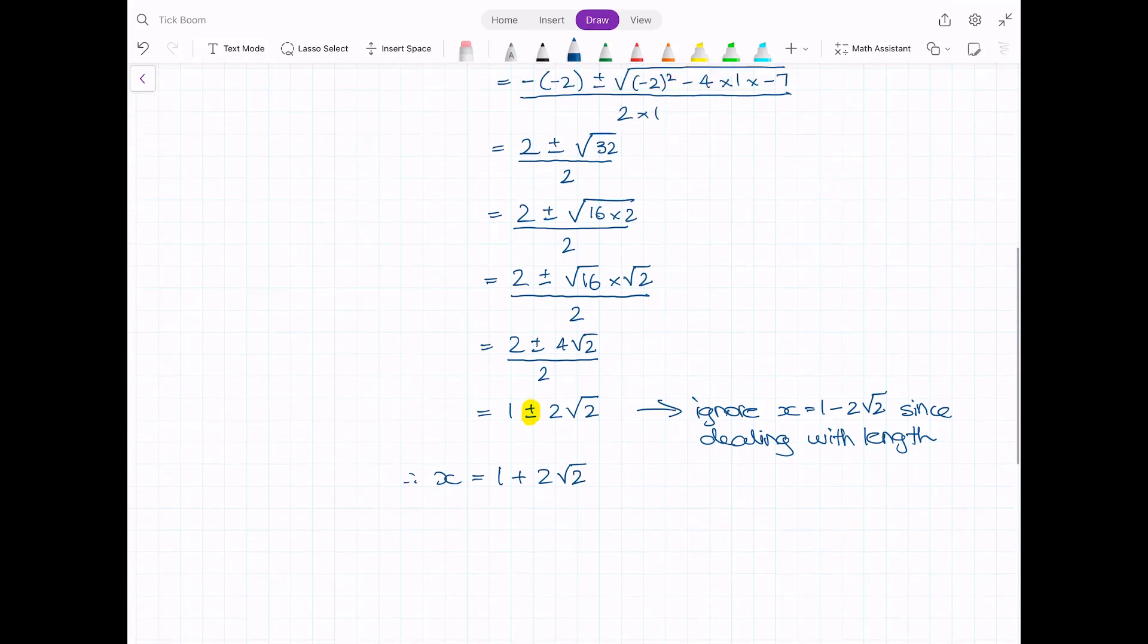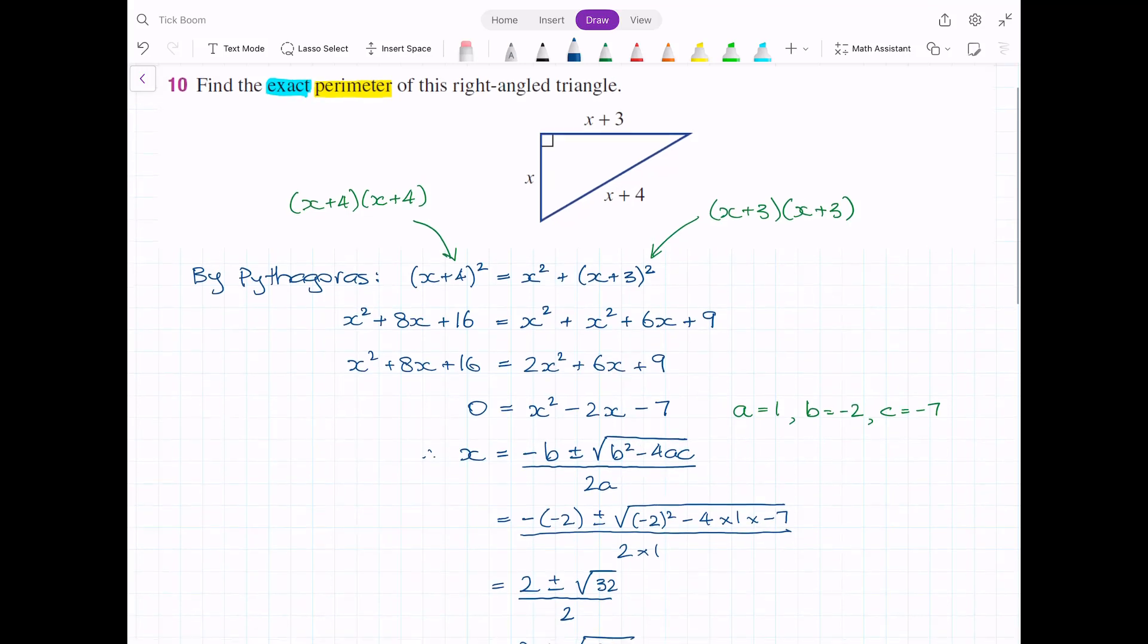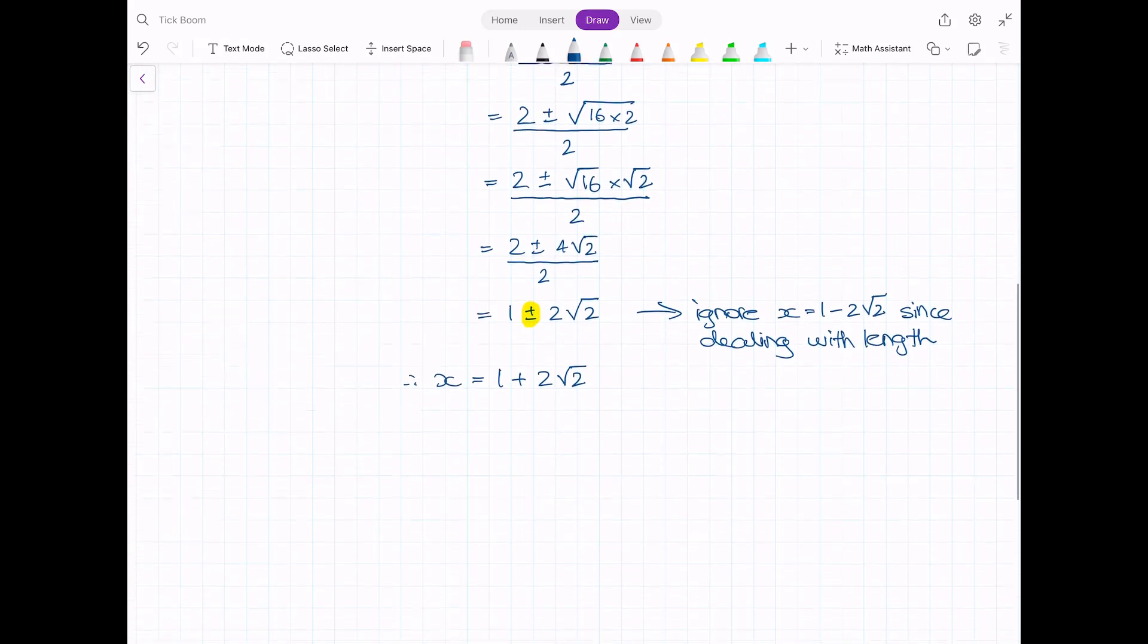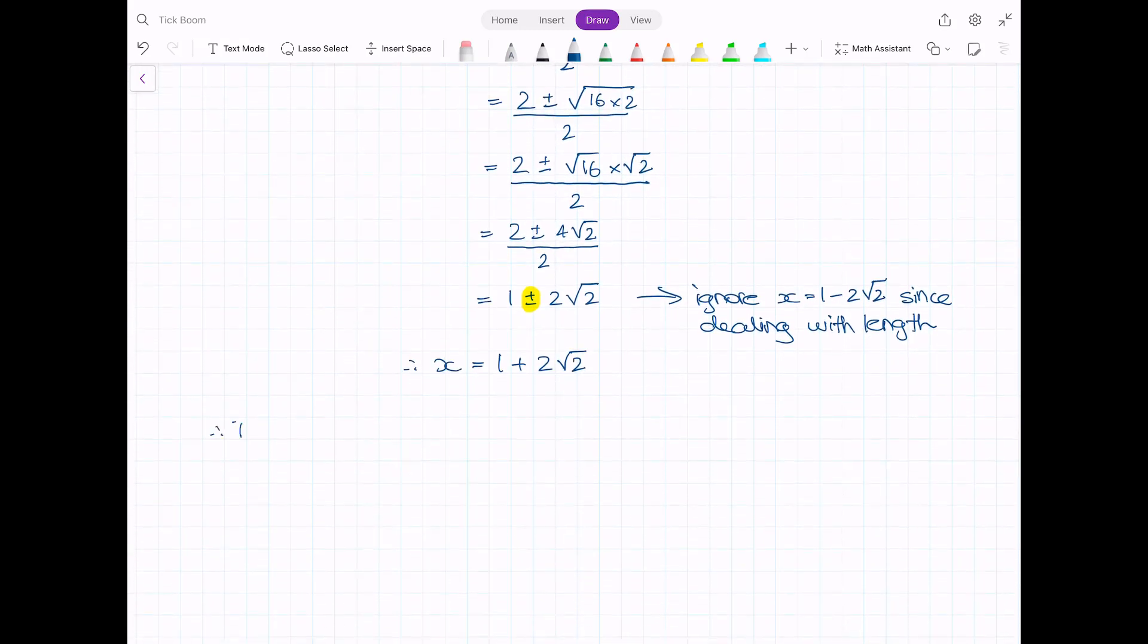As I mentioned before, we don't want to stop there because that's only step one to solving this question. The actual question wants us to find the perimeter. So we need to find the total of x, x plus 3 and x plus 4, keeping everything in exact form. Therefore, the perimeter of the triangle equals x + (x + 3) + (x + 4). If I simplify that quickly, we've got three x's, so that's 3x + 7.